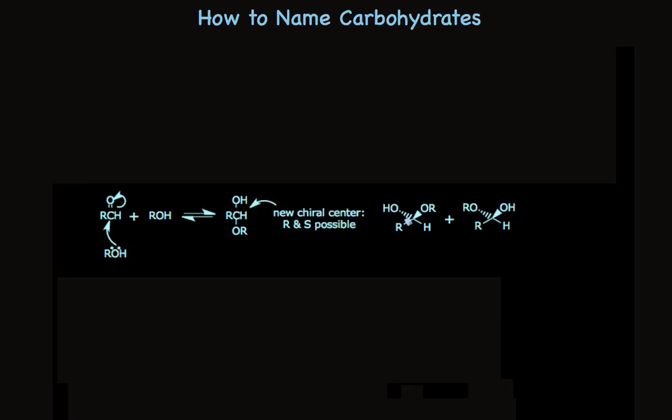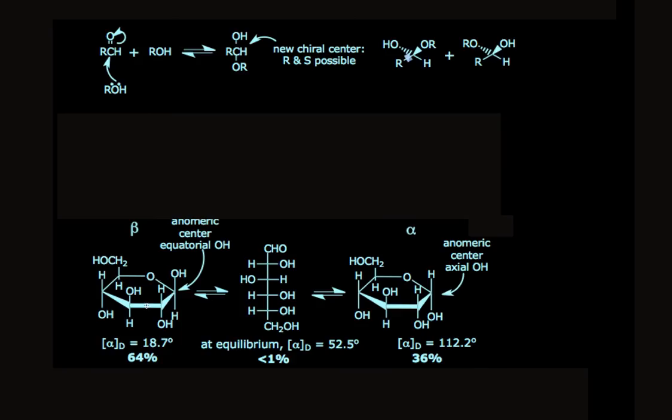Here's an example using glucose. Using the Haworth drawings, the hydroxyl group can either be sticking straight up at the anomeric center or straight down. The sugar chemists agreed that they would call straight down alpha and straight up beta. Now I have to work at remembering which is which, and this helps me. We have alpha, which is down, and beta, which is up. Notice that alpha and beta are in alphabetical order, and D and U are in alphabetical order.